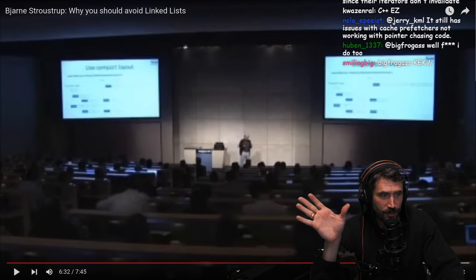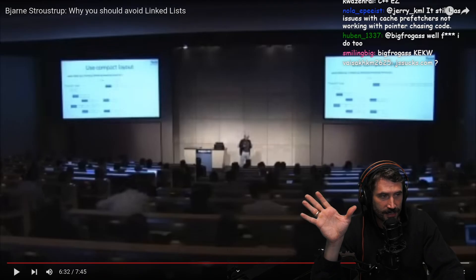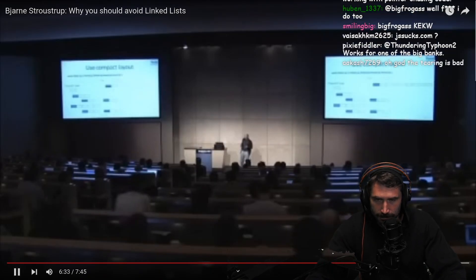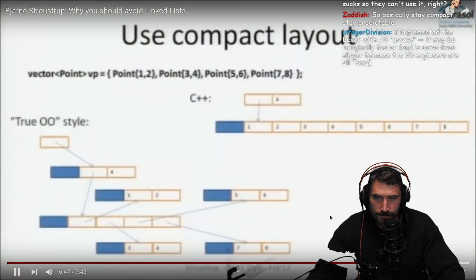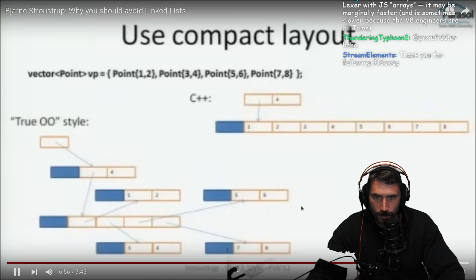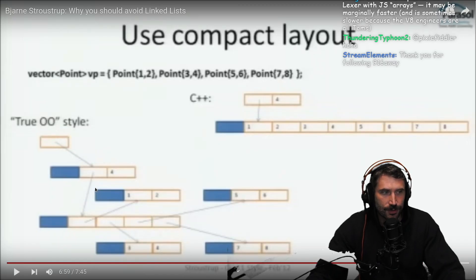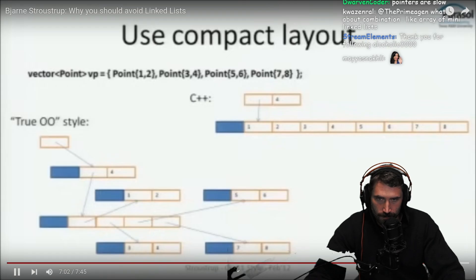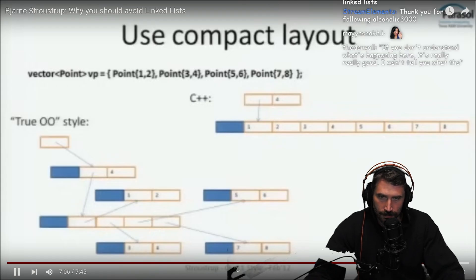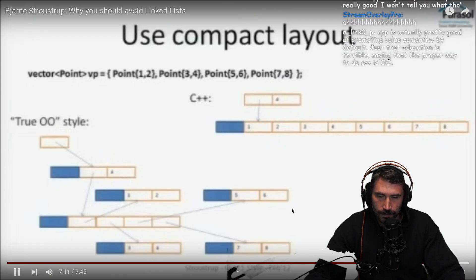In a truly object-oriented style — which some languages enforce — an object is referred to by a reference. This is exactly what JavaScript does with user-defined objects: you have a container of references and then the objects themselves elsewhere. That turns a linear compact data structure into a linked structure, and we just saw what linked structures do to performance.